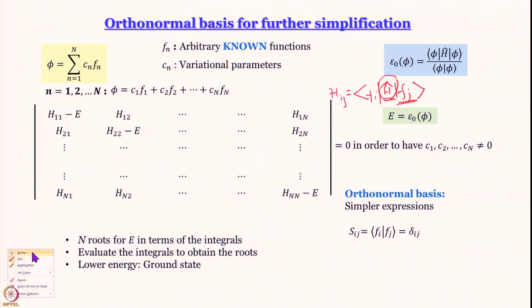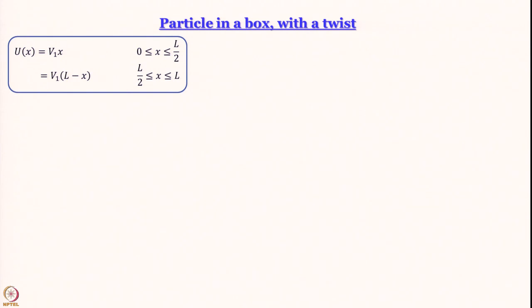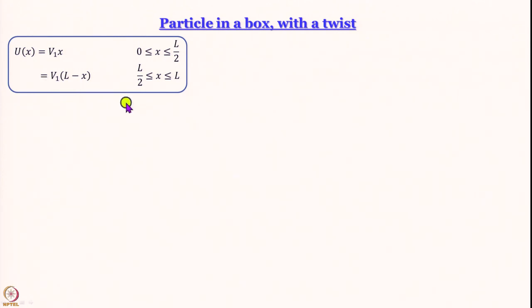So we will keep H_ij for now and set S_ij = 0 for i ≠ j, giving this form of secular determinant. Now we take our particle in a box example but with a twist: the potential energy is not zero. The potential energy is x-dependent: for x between 0 and L/2, it is V₁ · x, where V₁ is a constant. For x from L/2 to L, it is V₁(L - x).